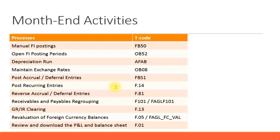You may also have recurring entries. To set up recurring entries, use the FBD1 transaction code. As discussed earlier, for a defined period of time you can schedule a recurring entry run and pre-define the debit and credit entries. Once the recurring entry is set up it is stored in a document, and every month you can post the recurring entries using the F.14 transaction code.